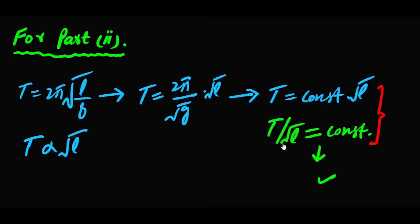اس equation کو modify کریں تو T/√L = constant بنتا ہے۔ اگر ہم ثابت کر دیں کہ pendulum کی مختلف lengths پر T/√L کی value constant رہتی ہے، تو یہ ثابت ہو جائے گا کہ time period is directly proportional to square root of length۔ اب ہم apparatus set کرتے ہیں اور part one اور part two کو ایک ساتھ perform کریں گے۔